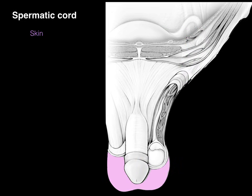The boundaries of the inguinal canal are formed by the layers of the abdominal wall. First, there's our skin — normal. Then, within the sublayer of the skin, is the dartos muscle and fascia — smooth muscle that helps wrinkle the scrotal sac.